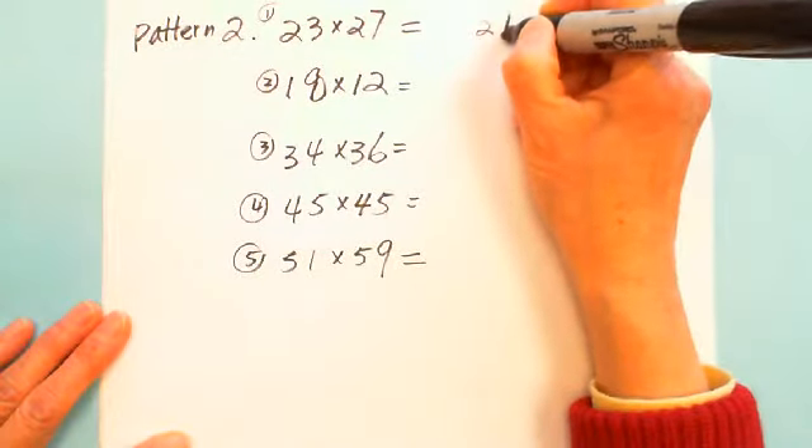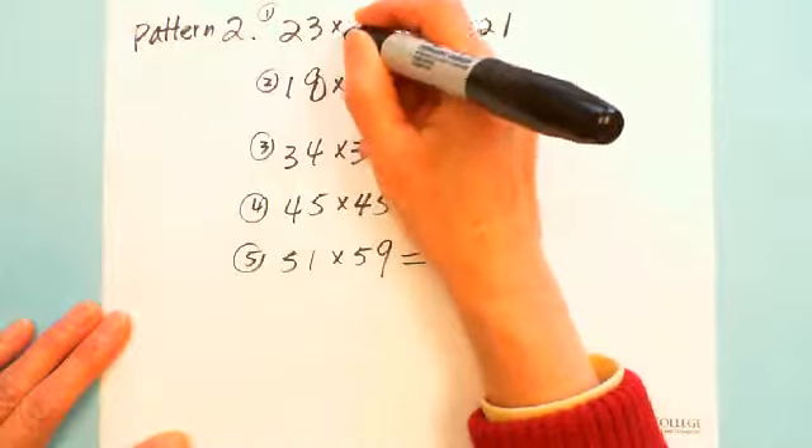The pattern is you multiply these two, 21. This is 2, we need 2 times 3, times 1 more, which is 2 times 3 is 6. So 23 times 27 is 621. Let's use a calculator to show you. 23 times 27, you got 621. See, 621.